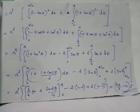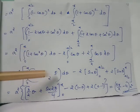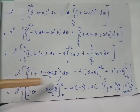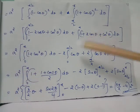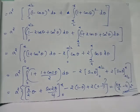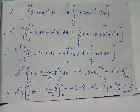We use the identity cos squared theta equals (1 plus cos 2theta) divided by 2, and cos theta is integrated directly. After applying the upper and lower limits, the final answer is obtained as (3π/2 minus 4) times A squared.